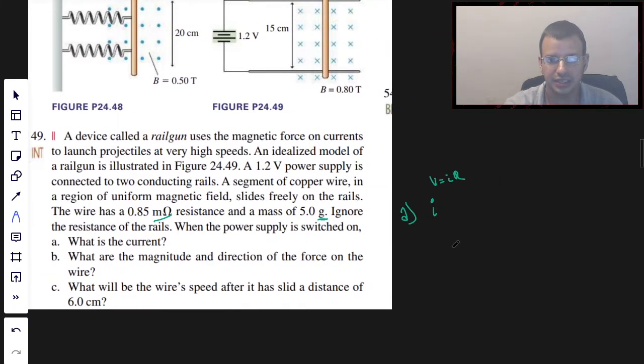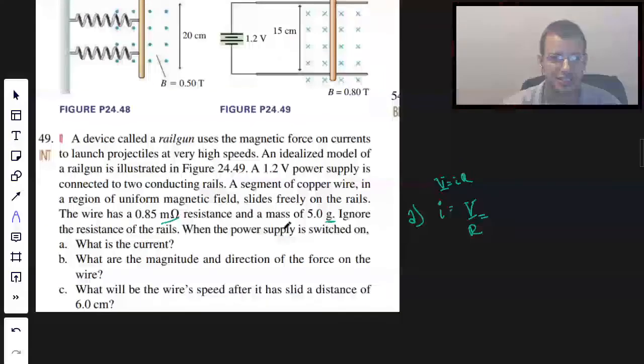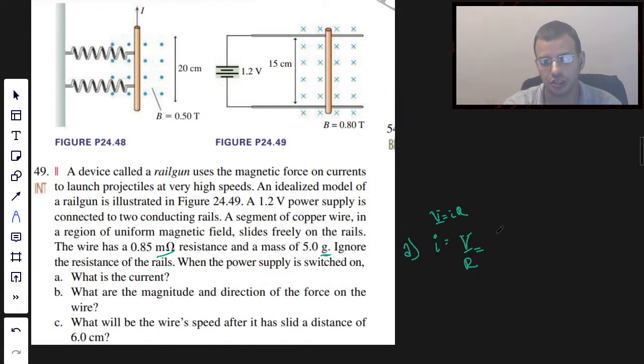We're going to rearrange that. So I equals, I'm going to do the little top things on the V, that way I know that's the V for voltage, make it look like a capital. Voltage over resistance R, and that's going to be 1.2 over 0.85 times 10 to the negative third, because they give it to us in milliohms.